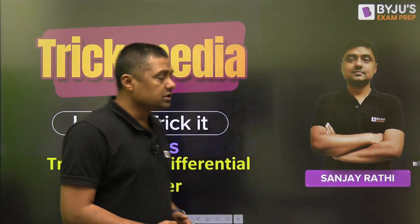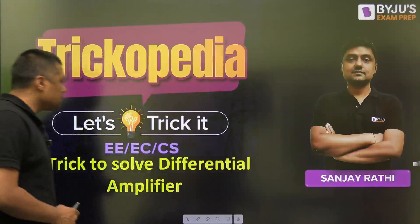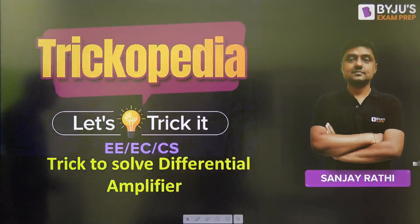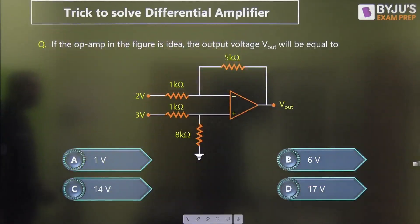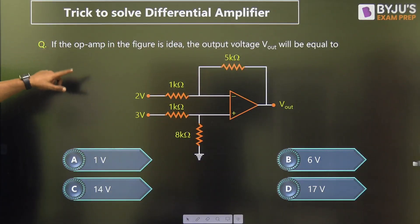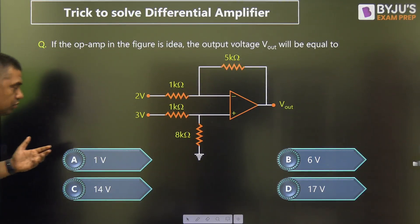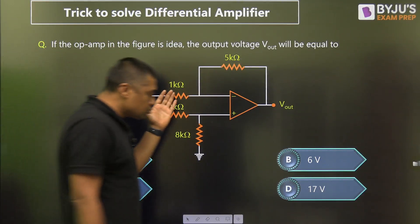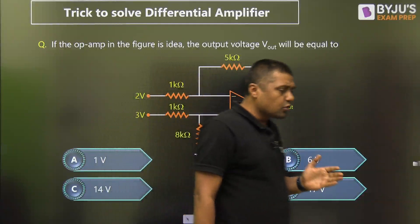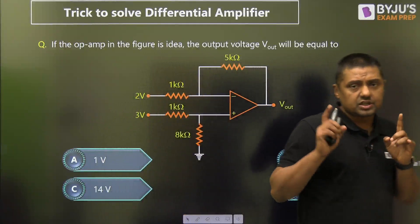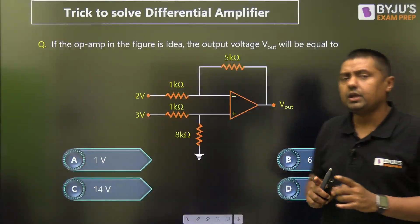Now watch how we can solve this topic. The question is: if the operational amplifier in the figure is ideal, the output voltage V-out will be equal to? This session is very important to solve this type of question.